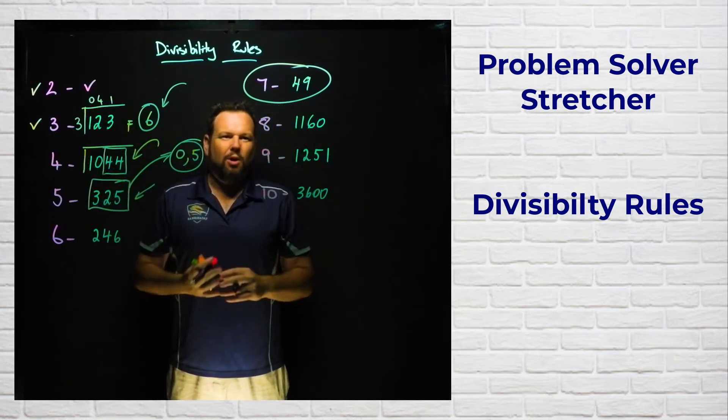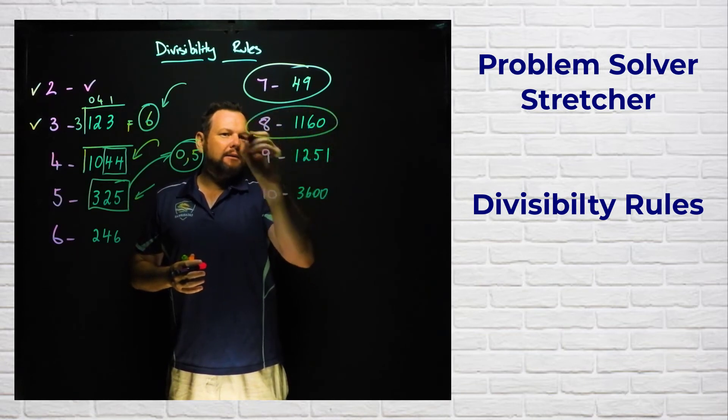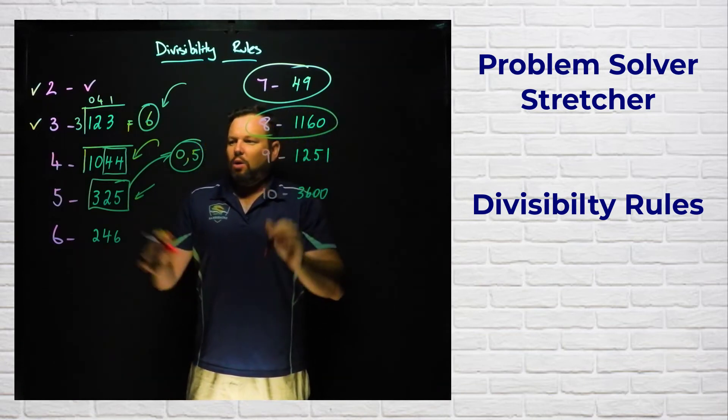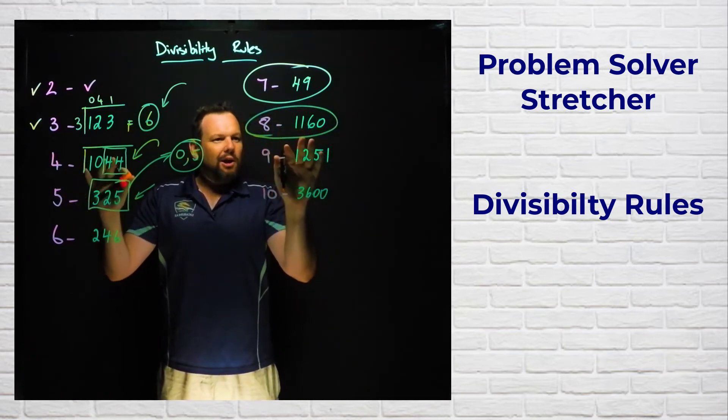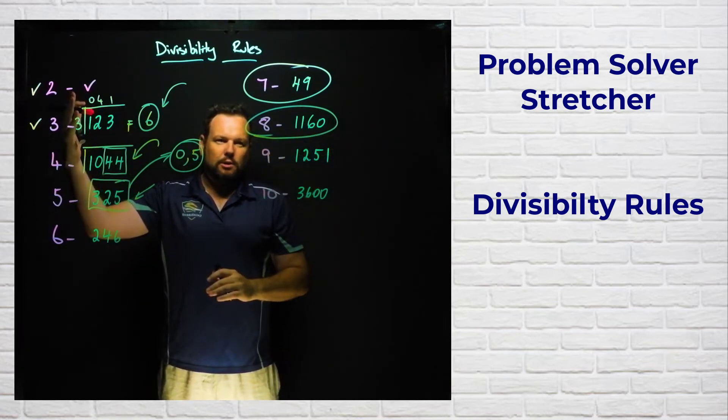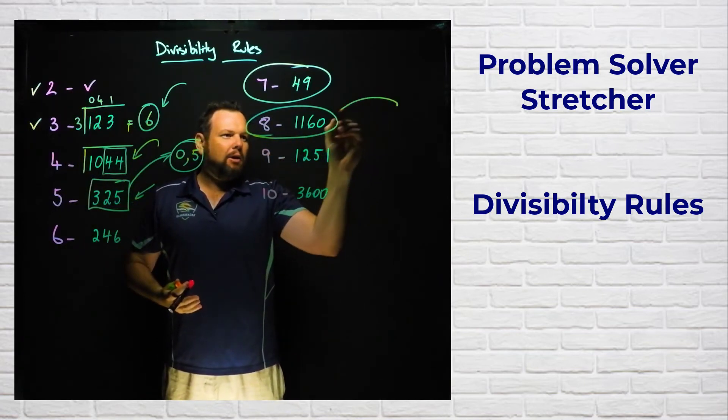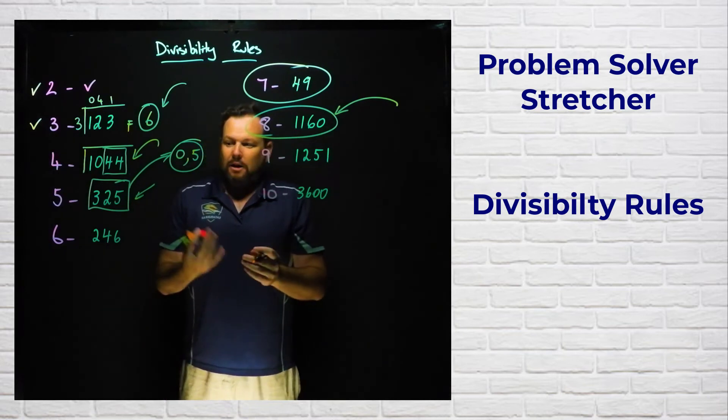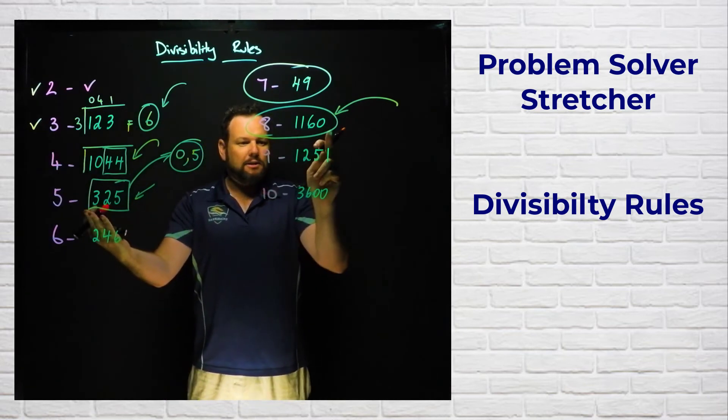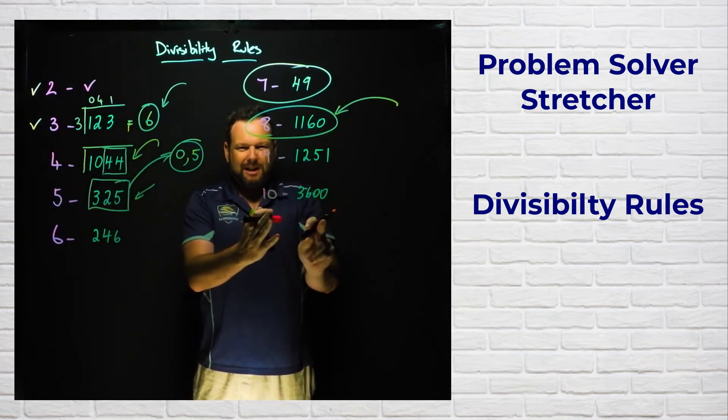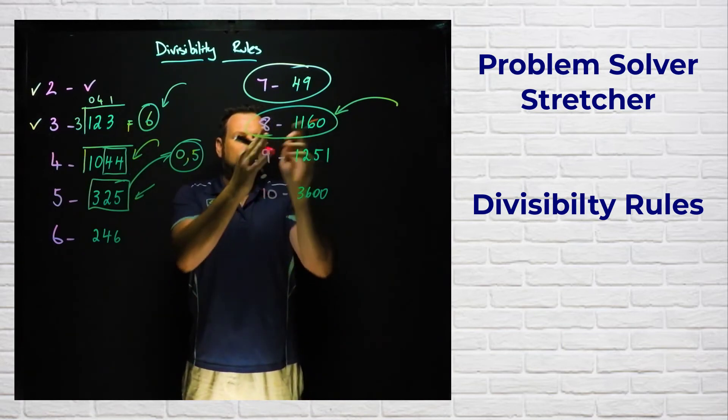Eight, like I said with four, if you've got a big even number just divide it by two. This number here I also know that I could divide that by five because it ends in a zero, or I could divide it by 10 because it ends in a zero. But there is a rule for eight.